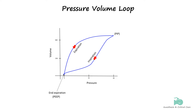The lower inflection point on the inspiratory curve indicates the pressure at which alveoli start to open, and is useful for setting appropriate PEEP levels. The upper inflection point indicates the pressure at which over-distension of the alveoli begins, helping to avoid volotrauma.